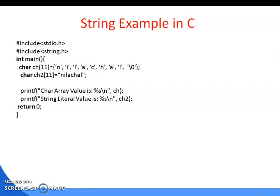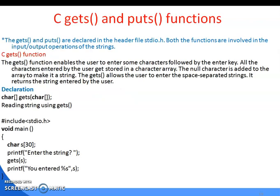Here is a string example in C: 'string.x', 'string s'. The two most popular string functions used in C are gets() and puts(). The gets() function enables the user to enter characters followed by the Enter key. All characters entered are stored in a character array, and a null character is added to make it a string. gets() allows the user to enter space-separated strings.